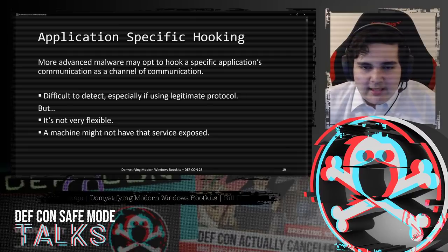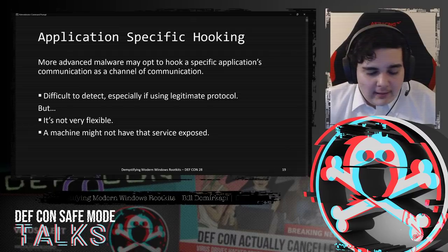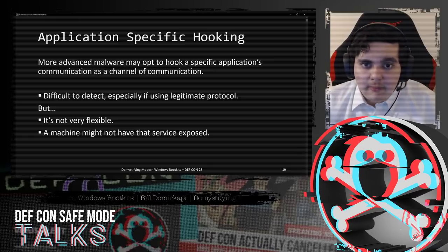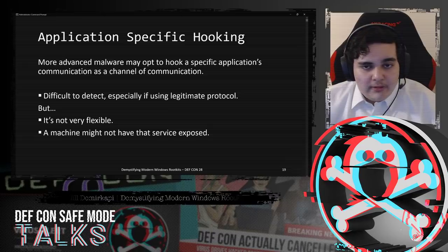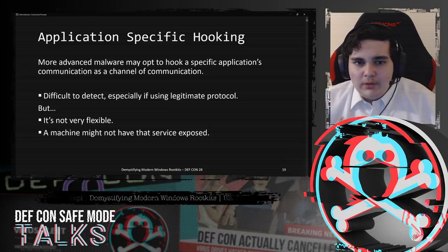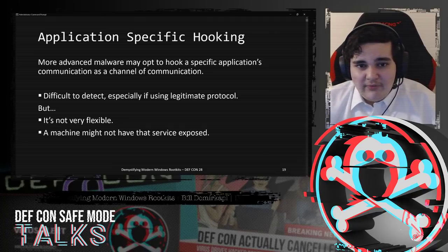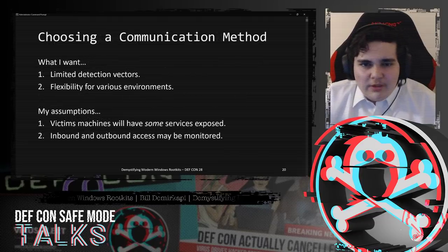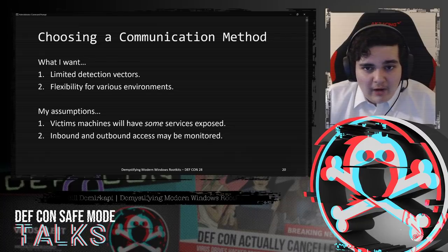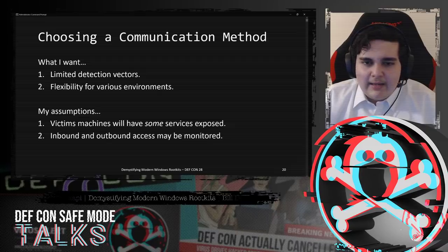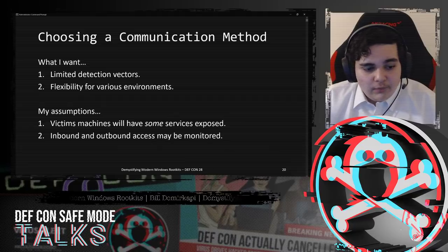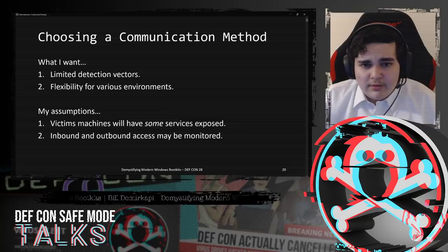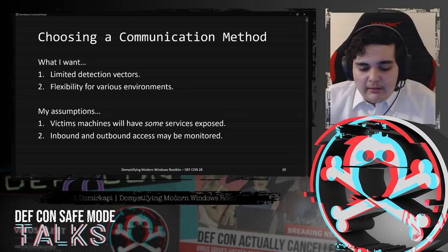A more advanced method I've seen is to hook into an application's network communications directly. This is very hard to detect, especially if you're mimicking a legitimate protocol. But it's not very flexible, because in a lot of environments you're going to have different ports exposed and different services running. So what I wanted when choosing a communication method was limited detection vectors, flexibility for a variety of environments, while making the assumption that some services will be exposed - especially in corporate environments with active domain services - but inbound and outbound access may be monitored.